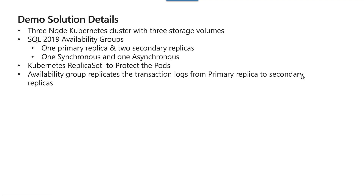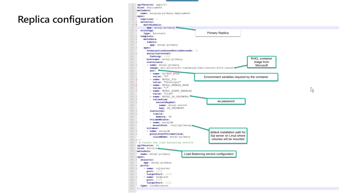Now let's understand our demo solution details. In this solution, we have deployed a three-node Kubernetes cluster with three storage volumes. We have used SQL 2019 availability groups. In this group, we have one primary replica and two secondary replicas. One of them is synchronously synchronized and another one is synchronized with the asynchronous option. The Kubernetes replica set is actually protecting the pods from all failures, and the availability group replicates the transaction log from primary replica to the secondary replica. The replica configuration is defined in a YML file.